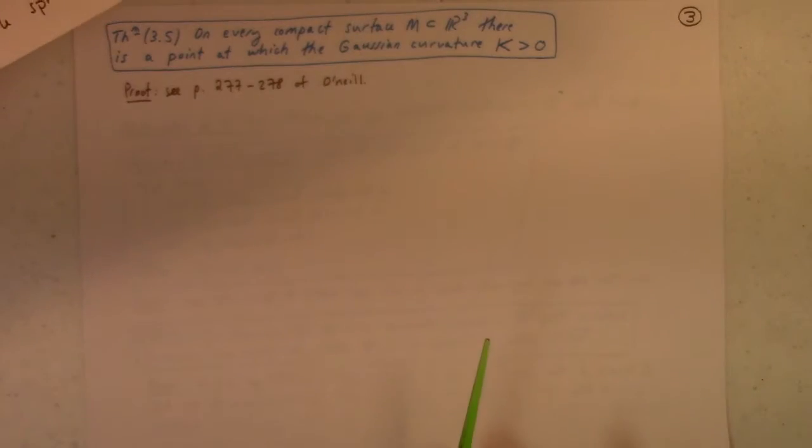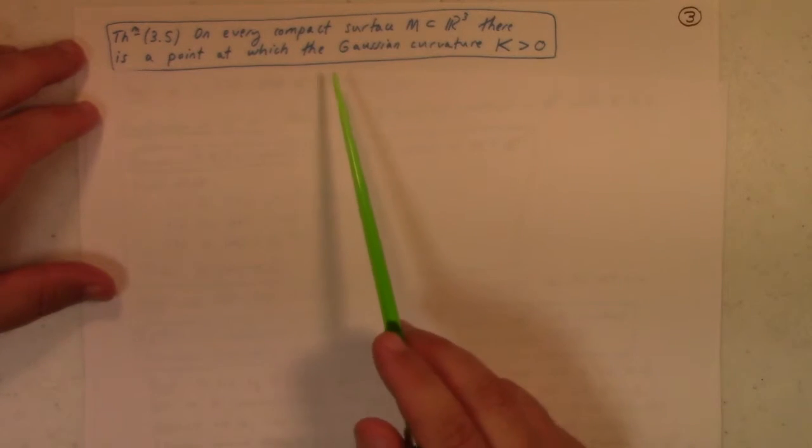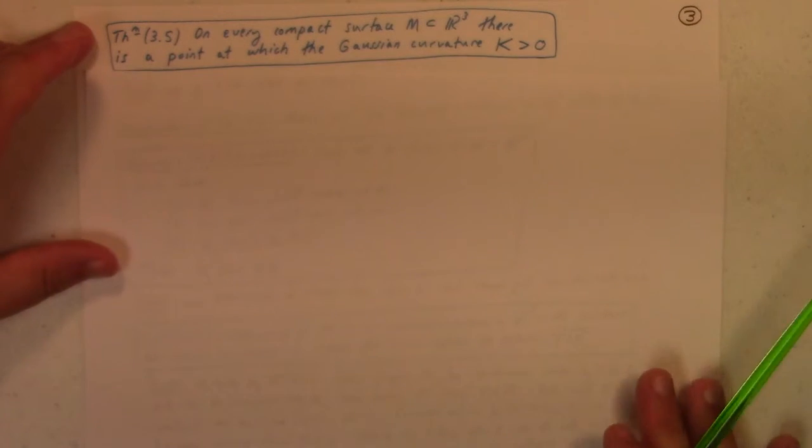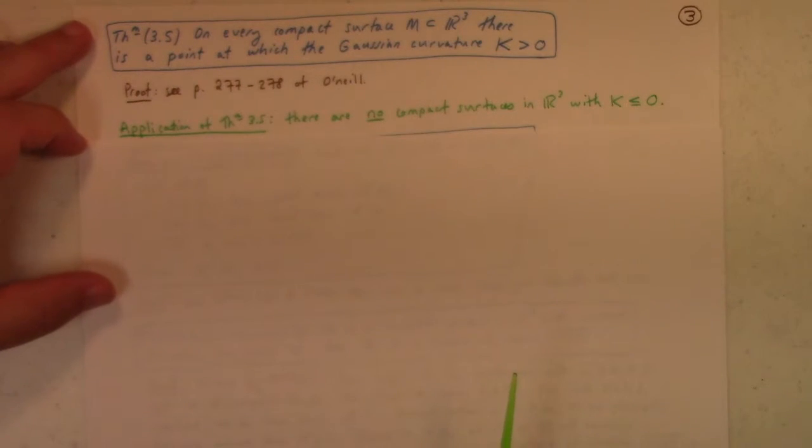Our next theorem is the following. On every compact surface, there is a point at which the Gaussian curvature k is positive. All right. The proof is on page 277 to 278 of O'Neill. Somewhat involved.